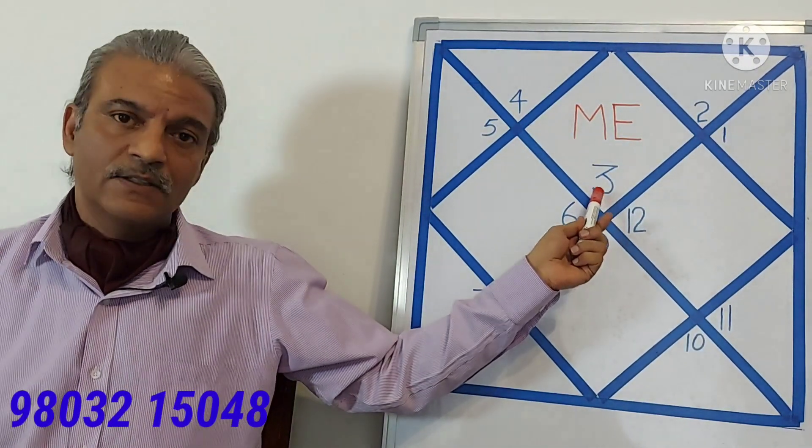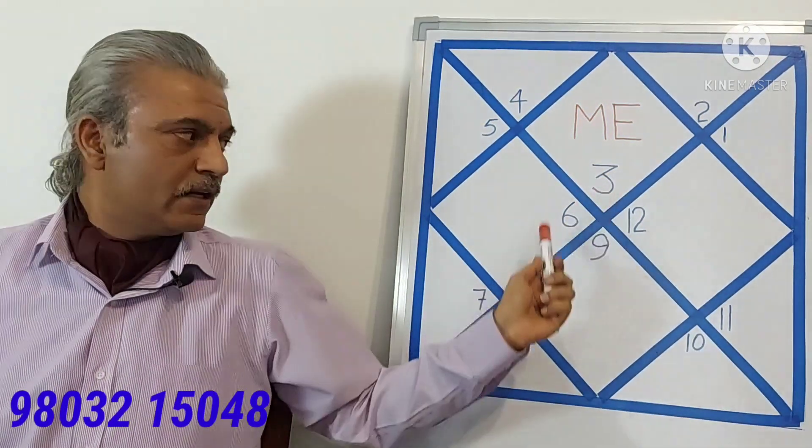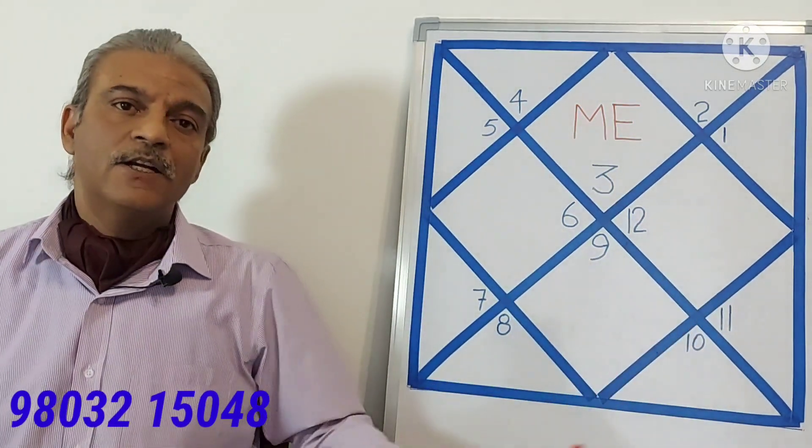That is, if 6 is there in the ascendant, then here you will find 9, 12 and 3 and so on.